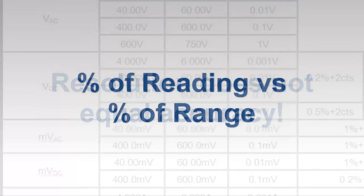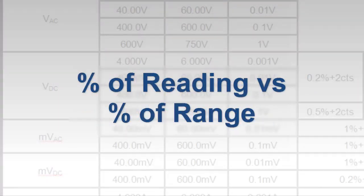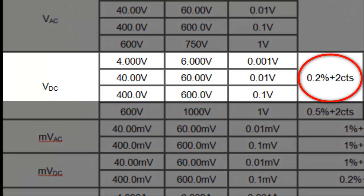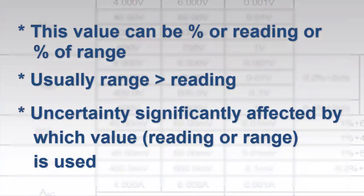A second factor in calculating uncertainty is expressed as a percentage. Recall our previous example specification of plus or minus 0.2% plus two counts. This indicates that the total uncertainty is two counts plus a percentage of a value. This can be a percentage of the reading or a percentage of the instrument's range. Uncertainty can be significantly affected by which of these values—reading or range—is used in the calculation, since the reading is generally much smaller than the range.